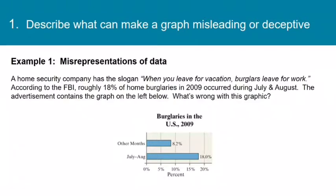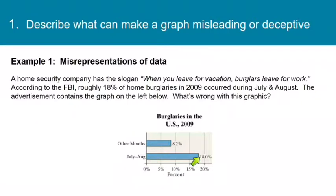What's wrong with this graphic? If you look closely at it, they have the months of July and August broken out, and they are displaying the total percentage of burglaries that occur in both July and August. But for the other 10 months, they have an average per month. If we divided by two, because we're talking about two months here, we'd have 9%, which is not that drastic of an increase over the other months.